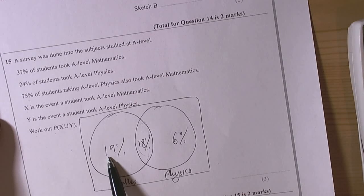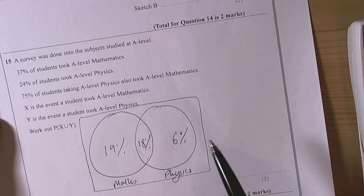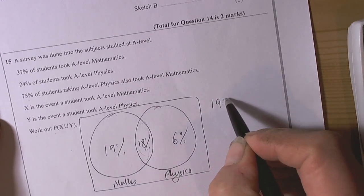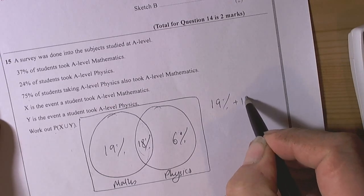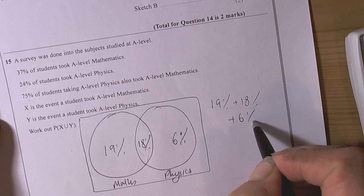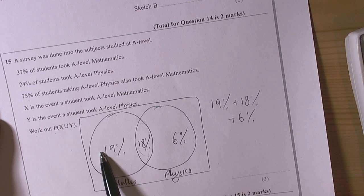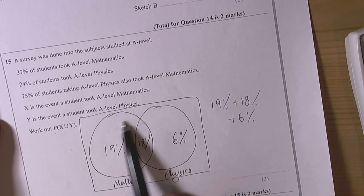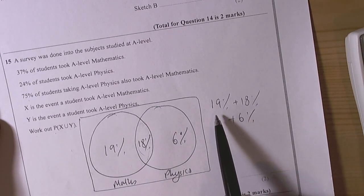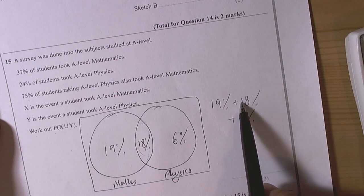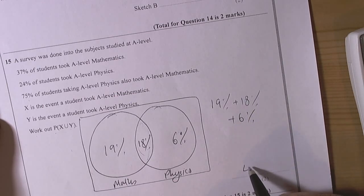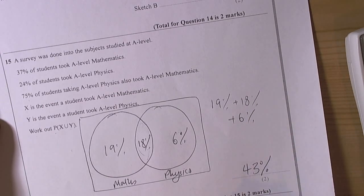So we've got the variables there and if we want the union then we want all of this data, so we've got 19 plus 18 plus 6 because the union is everything involved within the two circles. So we've got 19, 29, 37, 43, so the answer here will be 43%.